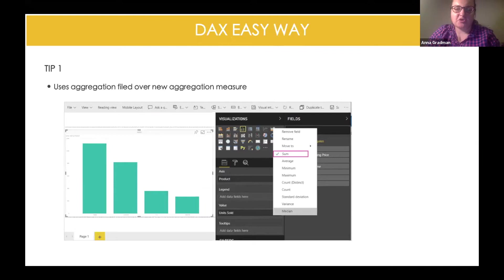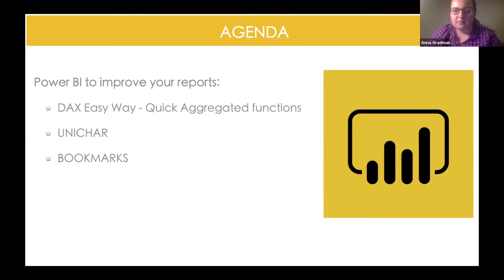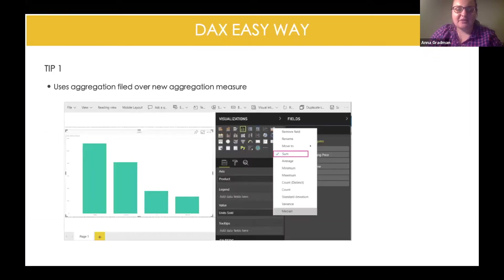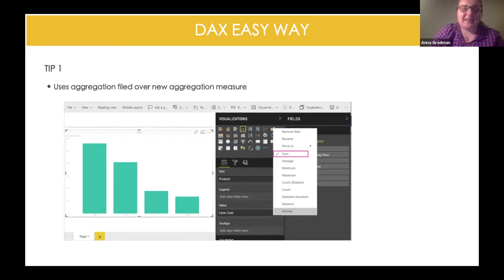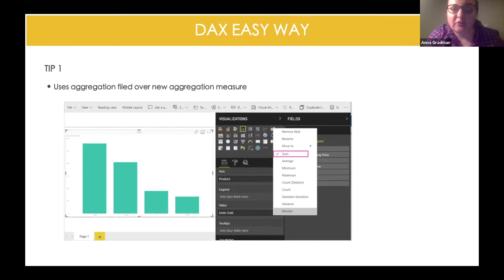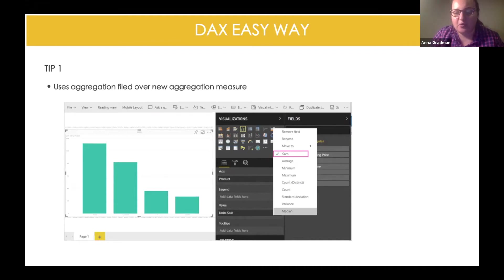I don't know how familiar you are with Power BI, but in Power BI we use DAX functions to create aggregate functions. I know it can be very painful, but if you have numeric values in your report, you just drop your numeric values to the fields, right-click on them, and you can easily get your aggregate function — average, minimum, maximum, count, distinct — whatever you're looking for in your tables. This way you don't need to create the DAX function itself; the functionality is already provided for you.